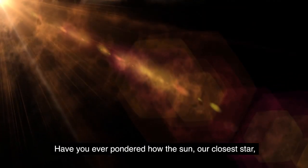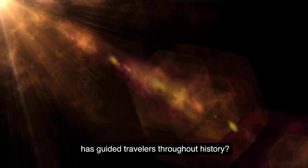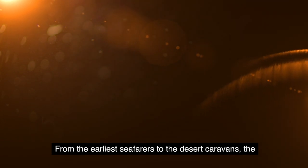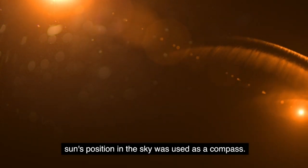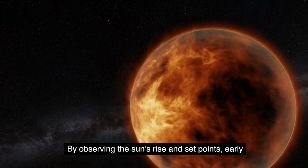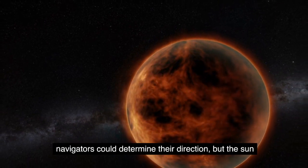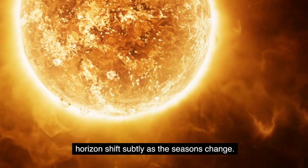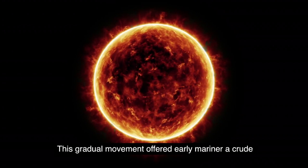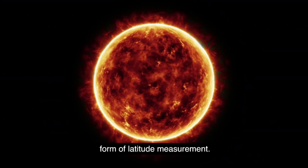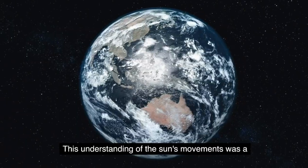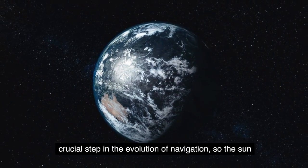Have you ever pondered how the sun, our closest star, has guided travelers throughout history? The sun has always been an indispensable beacon for ancient civilizations. From the earliest seafarers to the desert caravans, the sun's position in the sky was used as a compass, a reliable guide during the day. By observing the sun's rise and set points, early navigators could determine their direction. But the sun offered even more. Its rise and set points on the horizon shift subtly as the seasons change. This gradual movement offered early mariners a crude form of latitude measurement. They knew for instance that when the sun set at a certain point, they were at a specific latitude. This understanding of the sun's movements was a crucial step in the evolution of navigation.